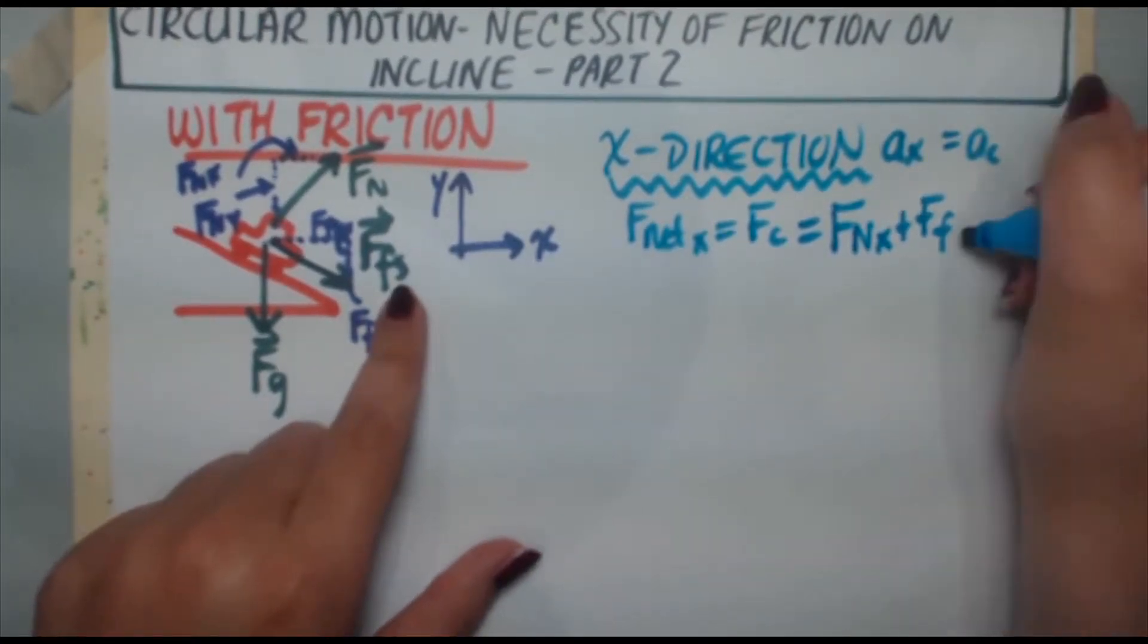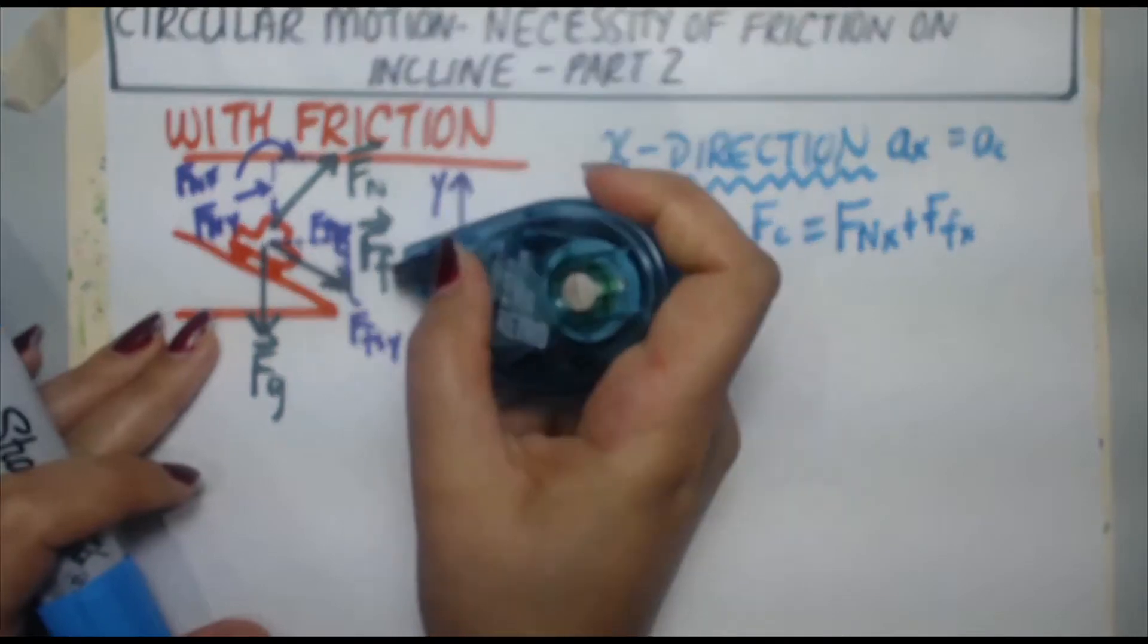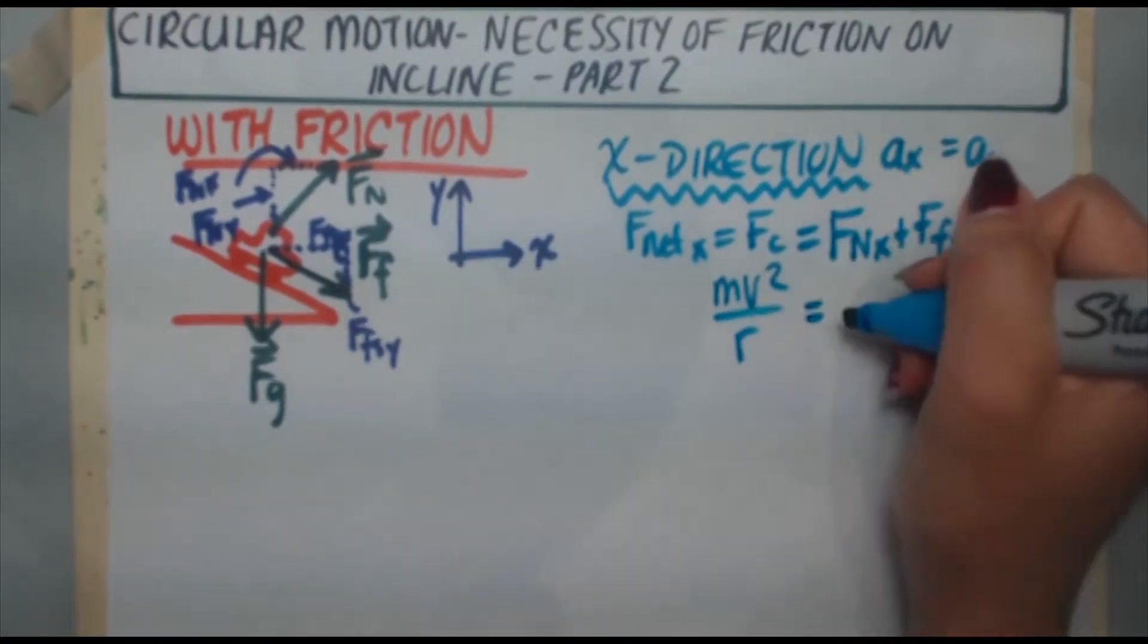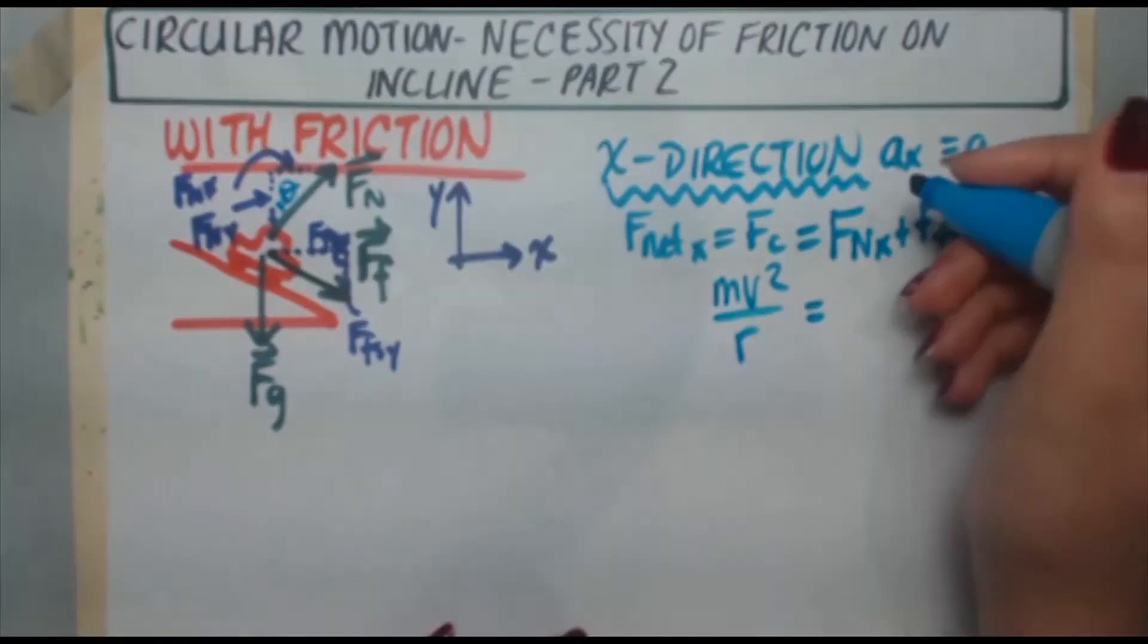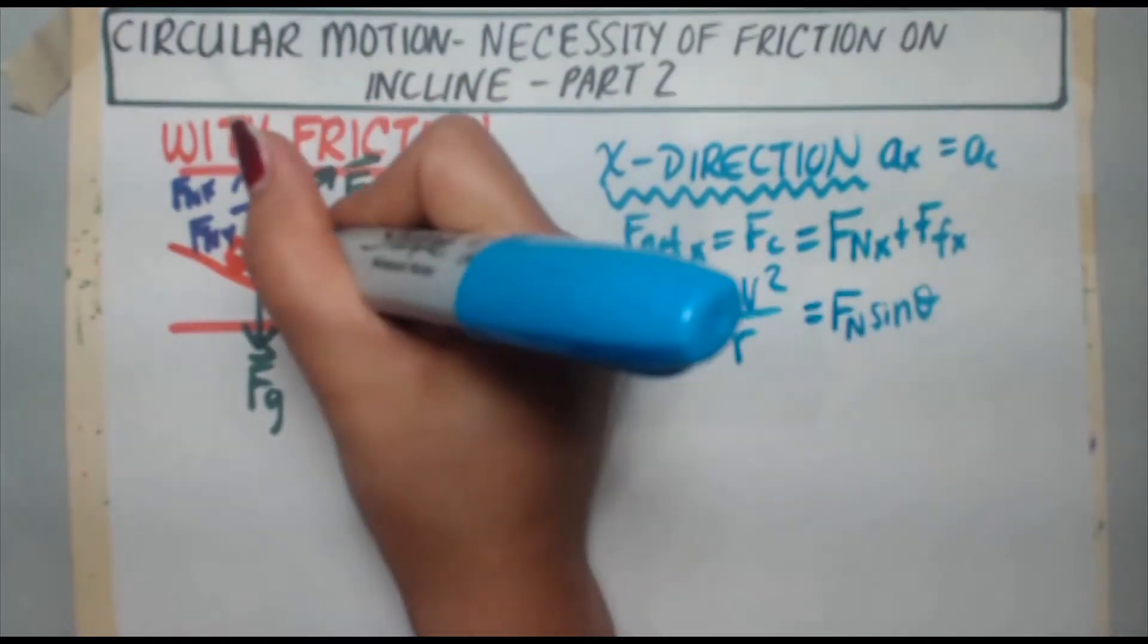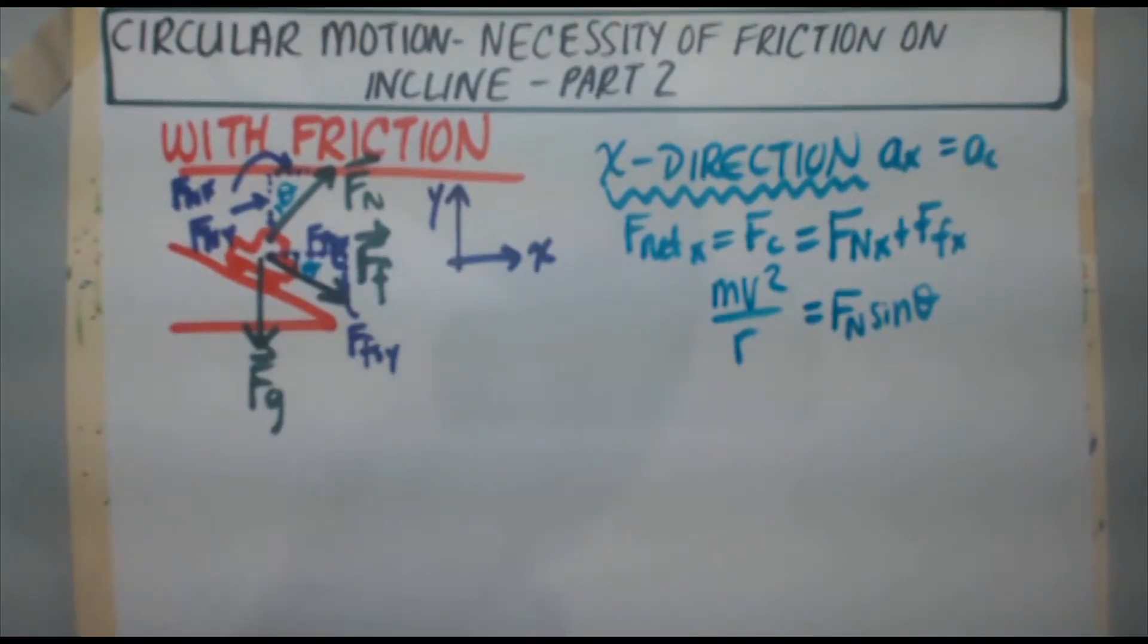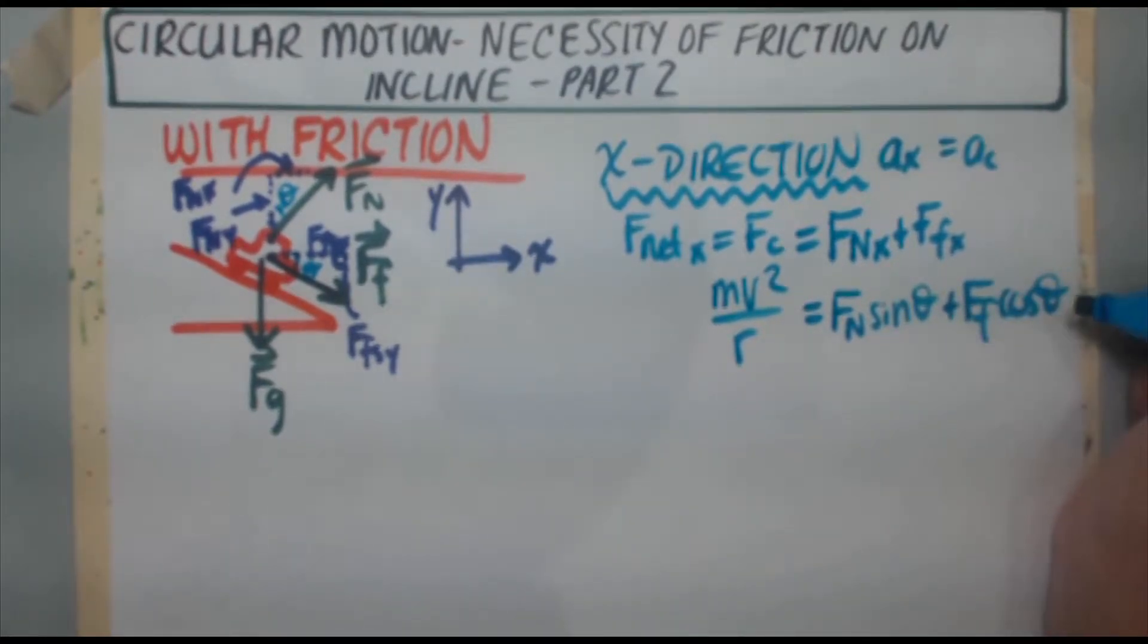So Fnx plus Ffx. We're not told it's static friction, so we can just call it Ffx to save a subscript. Centripetal force equals mv squared over r. Now Fnx, the x component is the hypotenuse times sine of theta. So Fn sine of theta. Likewise, Ffx is Ff times cosine of theta. So there's my equation.